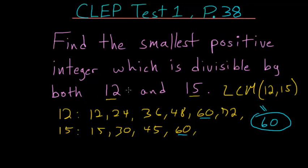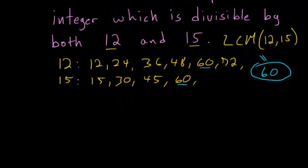But for numbers that are much bigger than this, just writing out all the multiples can be tedious and can take a really long time. So one quick way to do this is to figure out what the factors of each 12 and 15 are.